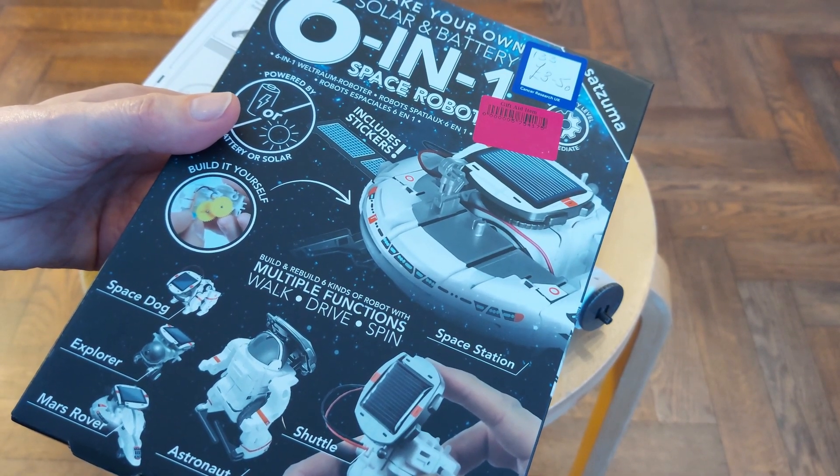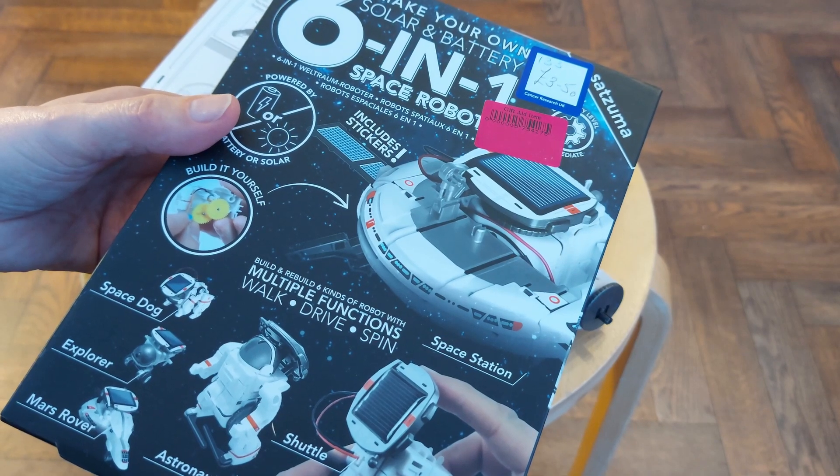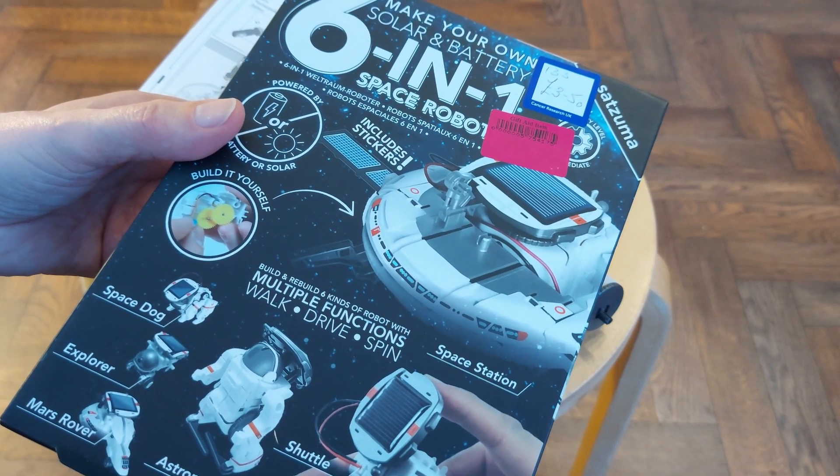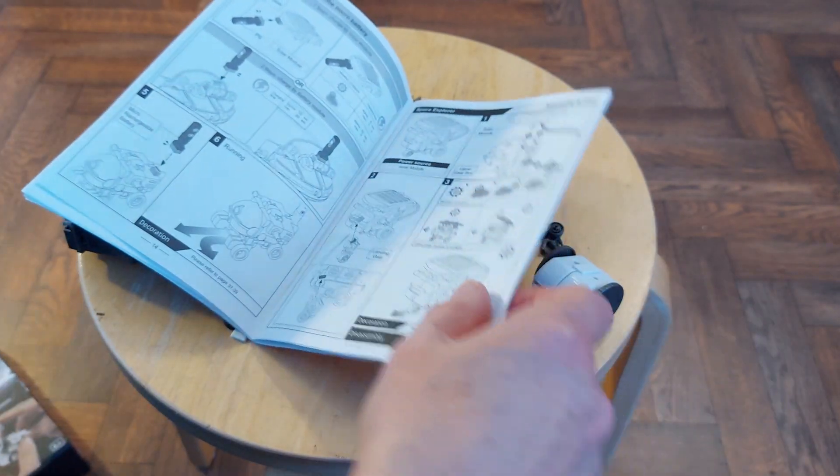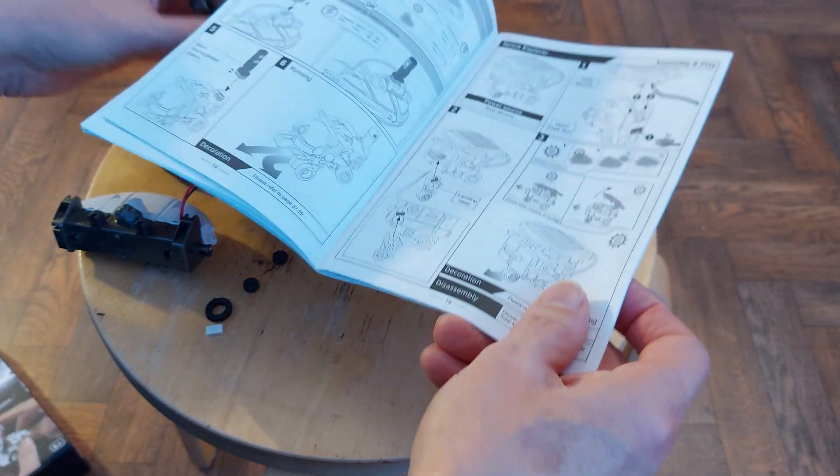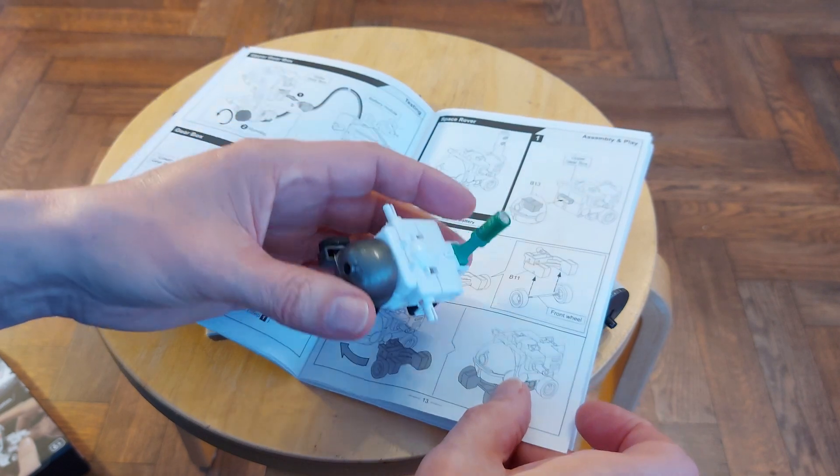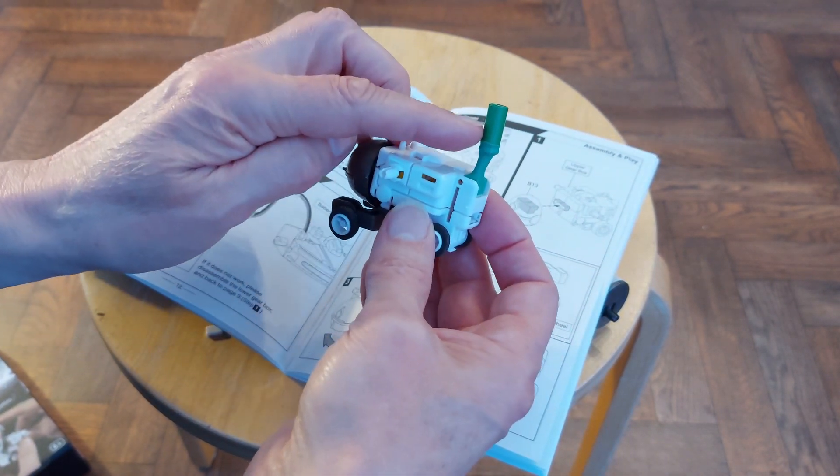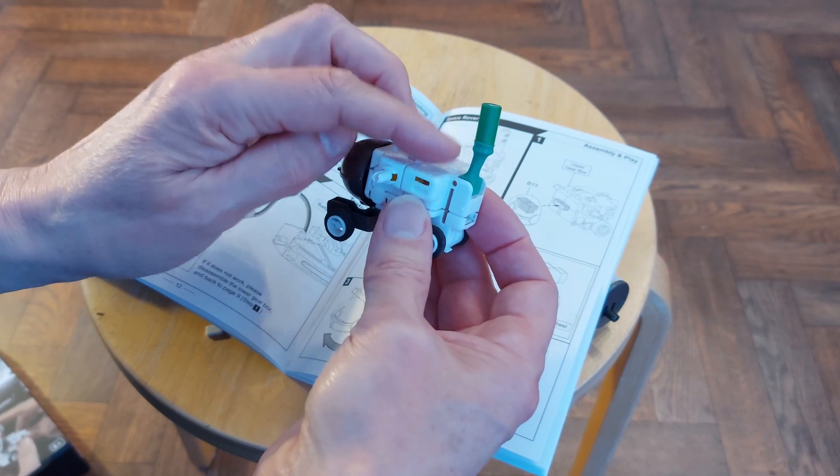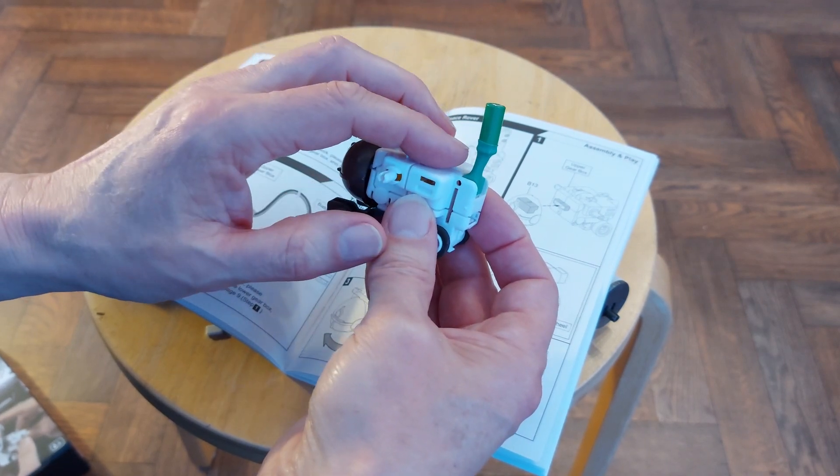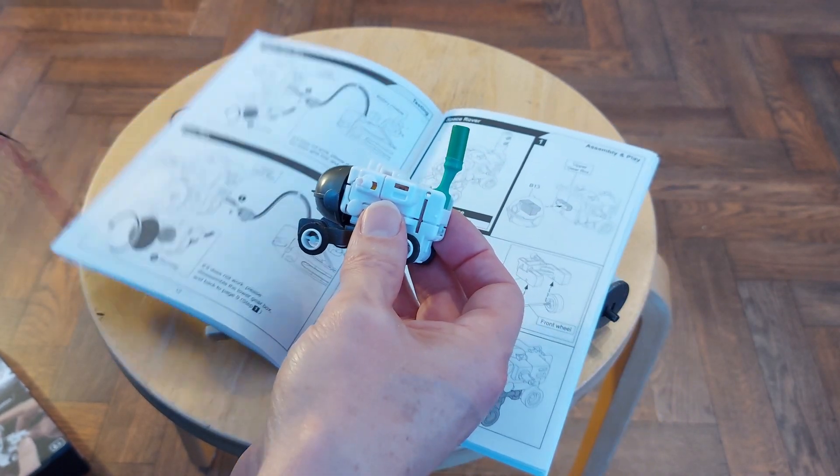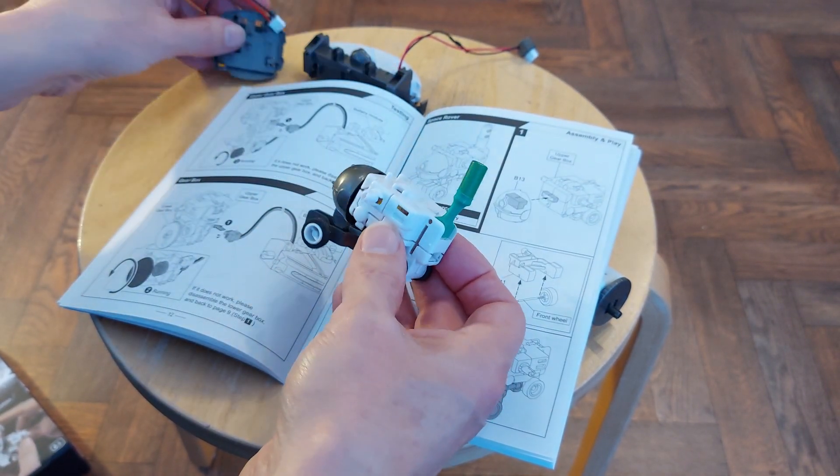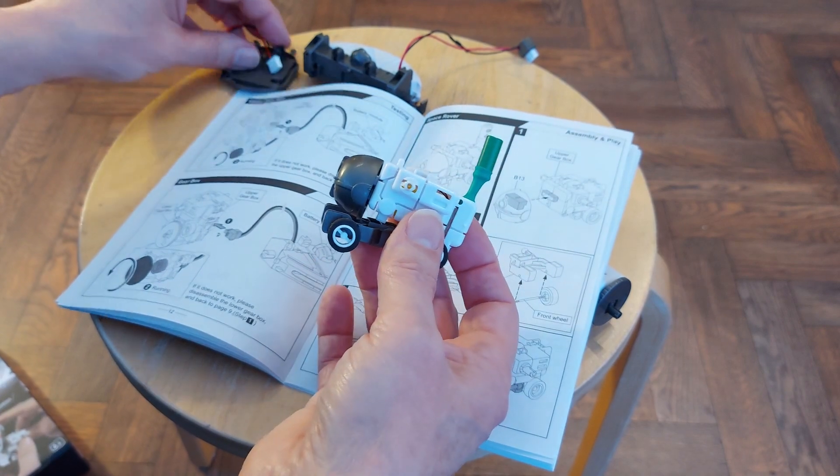In episode one, I assembled the gearbox, motor, battery box, that sort of thing. In episode two, we put together the space rover that uses the supercapacitor, which you can charge from the solar panel or from the battery box. Don't charge off either of them. That ran very well.